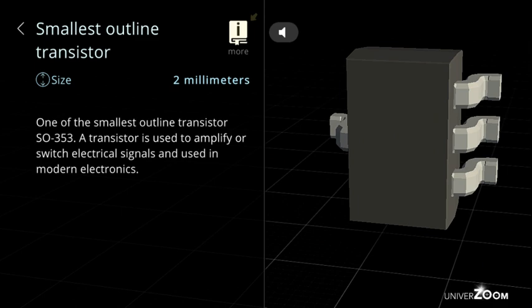Smallest outline transistor, size: 2 millimeters. One of the smallest outline transistors, SOT-353. A transistor is used to amplify or switch electrical signals and used in modern electronics.